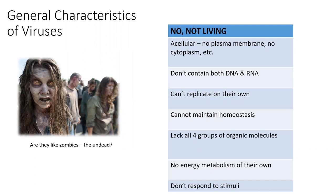Living things have those four big groups of macromolecules: lipids, carbohydrates, nucleic acids, and proteins. Viruses do not have all four. As mentioned, they do have genetic material, and that genetic material is surrounded and protected by a protein coat called a capsid, which we'll talk more about in a different video. But they do not have all four of those macromolecules that living things need in order to live.